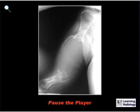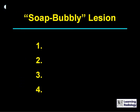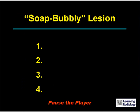Here's the next differential. The differential is for a soap bubbly lesion of bone. There are four major causes.